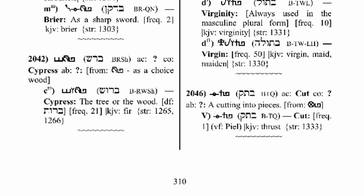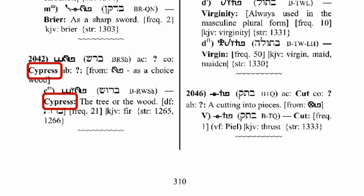This is the adopted root, identified by number 2042, and means cypress. The adopted roots follow the same format as the child roots, and the words derived from them also follow the same format. They include the Hebrew, a transliteration, and definitions. The only difference is that the adopted root will identify the parent root, if known, which it is believed to be derived from. In this case, it is believed that the root is derived from the parent root bar, which we have been examining, in the sense of the cypress wood being a choice wood.